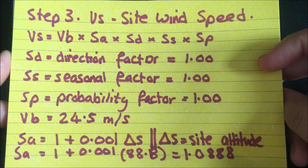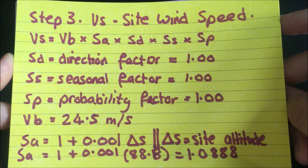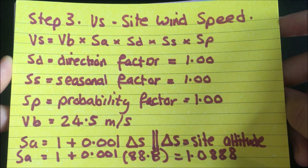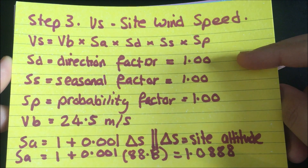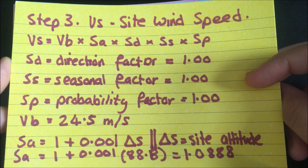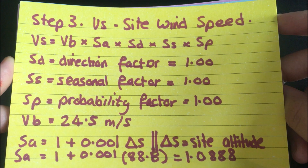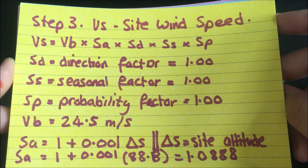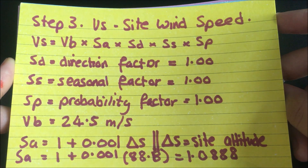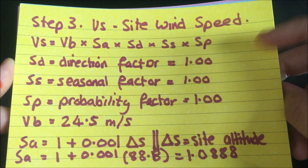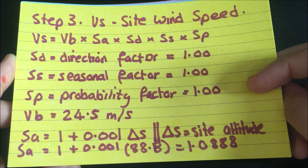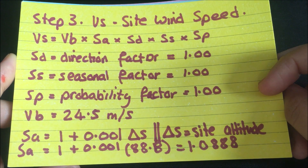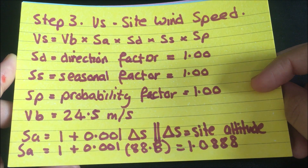SD stands for direction factor, which relates to the orientation of the building. In this instance the orientation is unknown, so the direction factor should be taken as 1. SS represents the seasonal factor — for a permanent building exposed to wind for a continuous period of more than six months, SS equals 1. The probability factor SP is used to account for the basic wind speed being exceeded from the standard value, and a value of 1 is used for that.